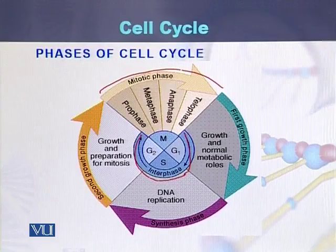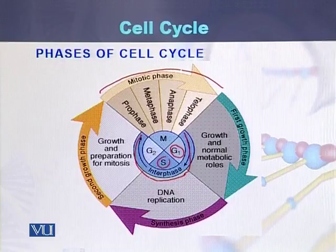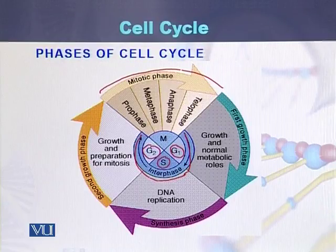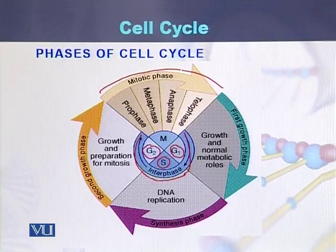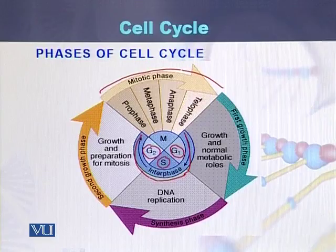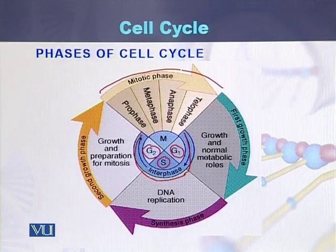Interphase consists of three phases: G1 phase, S phase, and G2 phase. During G1 phase there is growth and normal metabolic roles of the cell. During S phase there is DNA replication and synthesis of genetic material. During G2 phase there is growth and preparation of the cell for mitosis.